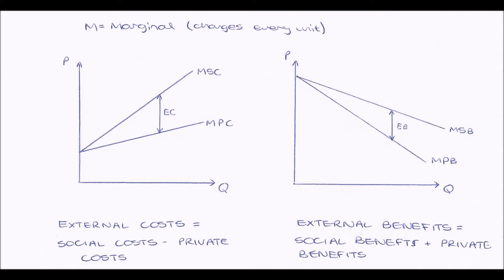Because the external cost is the difference between those two lines — the difference between the marginal social cost and the marginal private cost — we can determine a kind of formula: external costs are equal to social costs minus private costs, because external costs are the difference between those two lines.